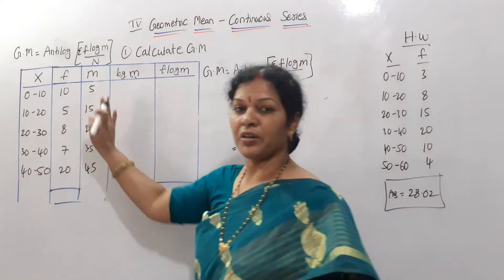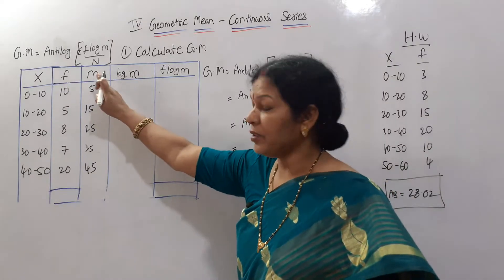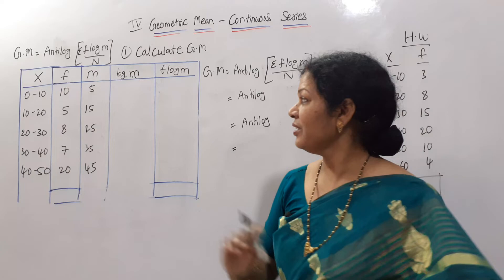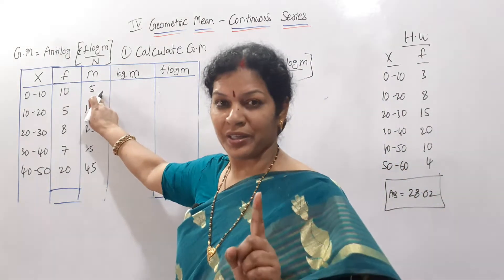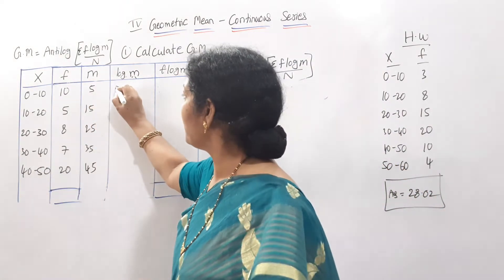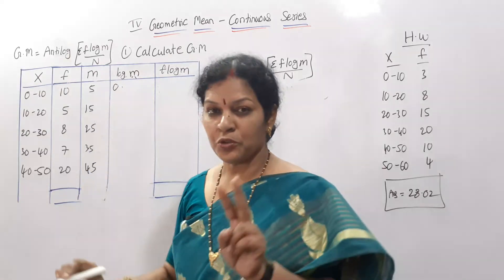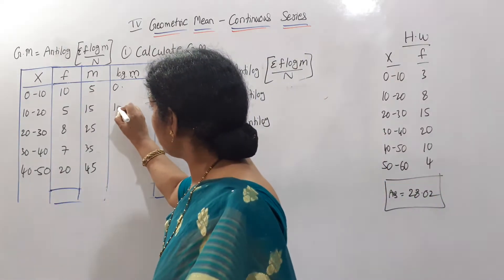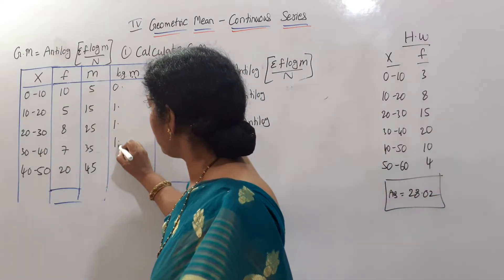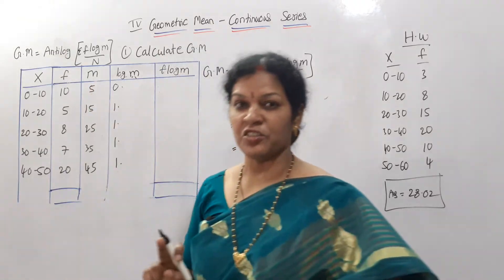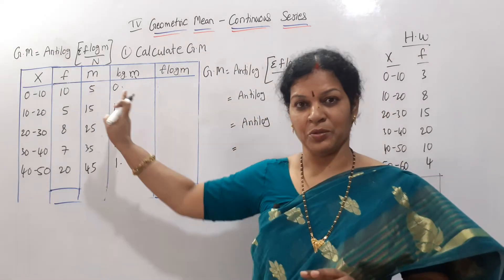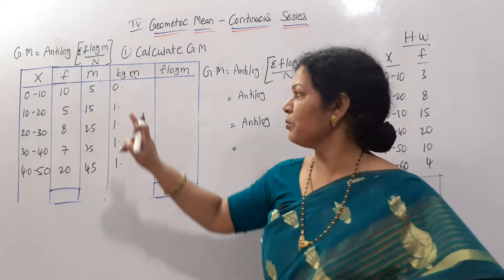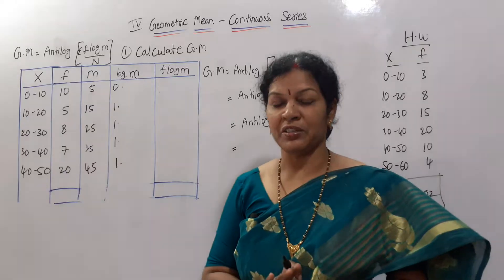We have the mid values. Next we need log m. We take the logarithm of each mid value. For 5, which is a single digit, the characteristic is 1 minus 1 equals 0, so we write 0. For two-digit numbers like 15, 25, 35, and 45, the characteristic is 2 minus 1, which equals 1, so we give the weightage of 1.